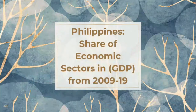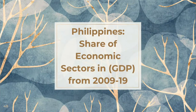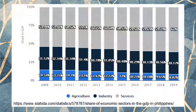However, in reality there needs to be balance — no sector should be left behind. Looking at the Philippine share of economic sectors in GDP from 2009 to 2019 (based on Statista), there is a clear decline in agriculture.